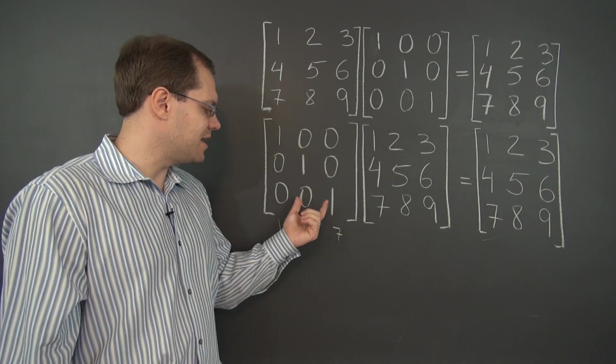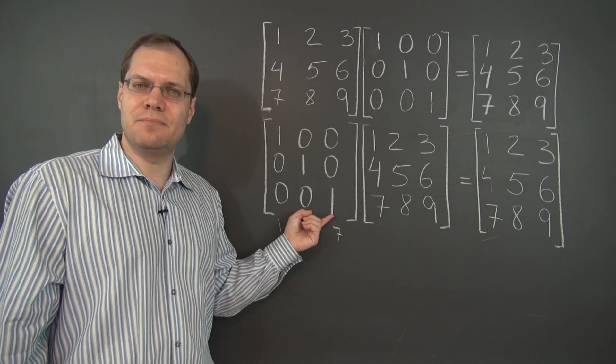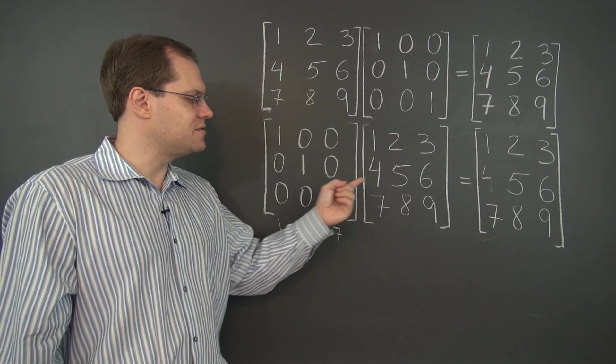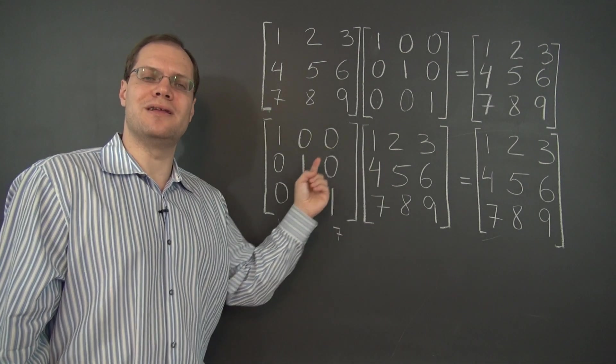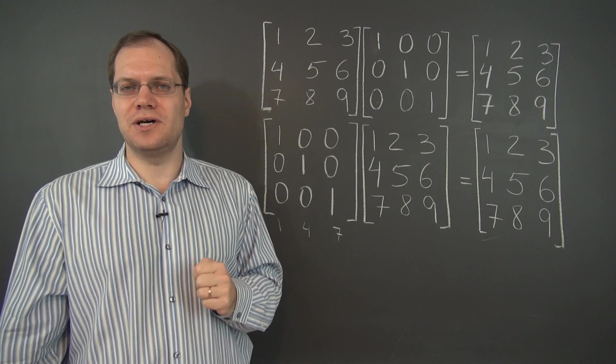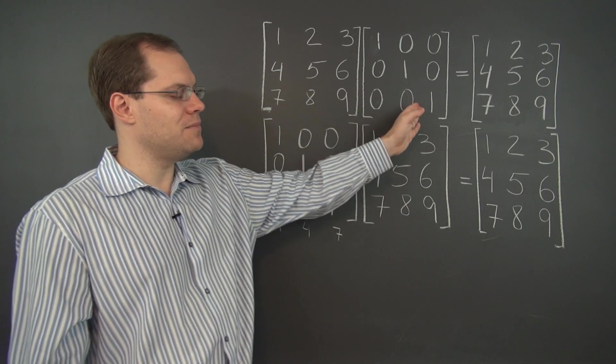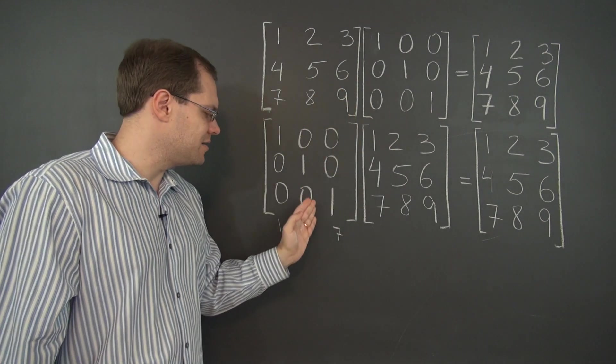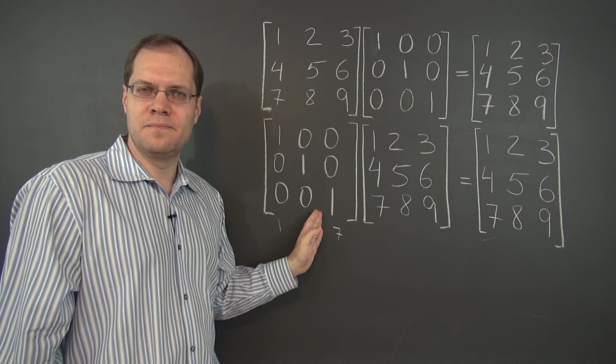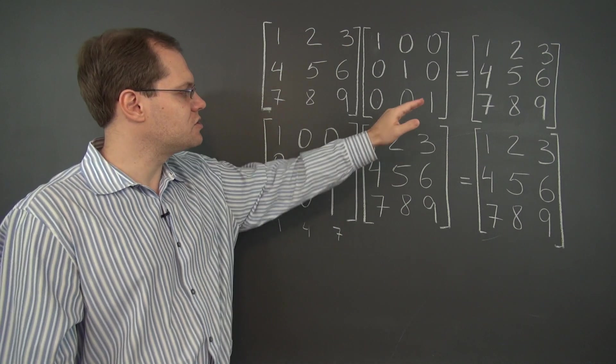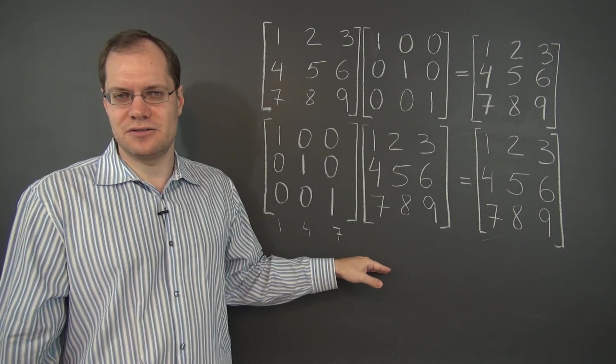The big picture is that this matrix, the identity matrix, leaves the matrix that multiplies from the left unchanged as well. So this spares us the need of calling one matrix the right identity and another matrix the left identity, because it is the same matrix, and it is called the identity matrix.